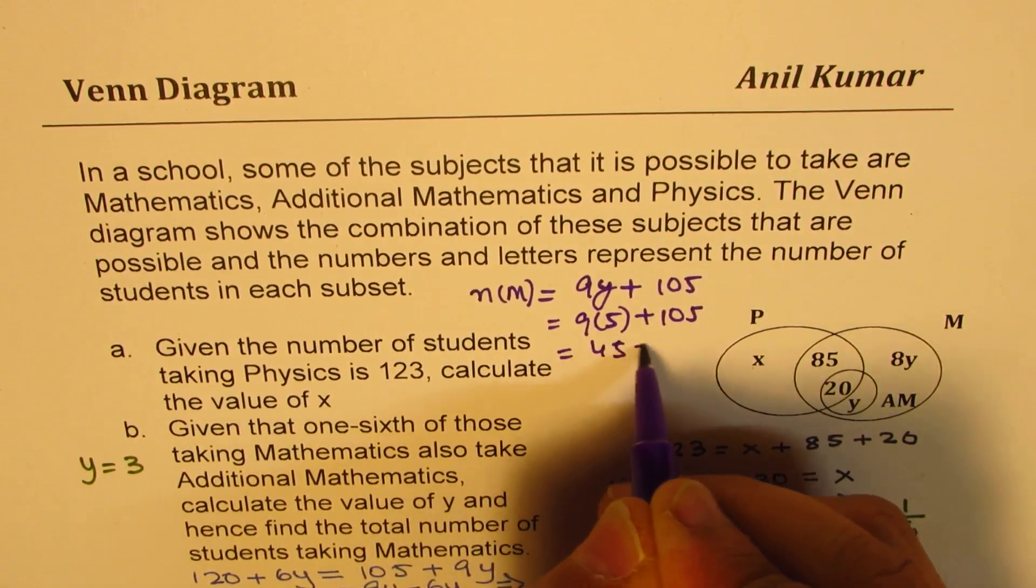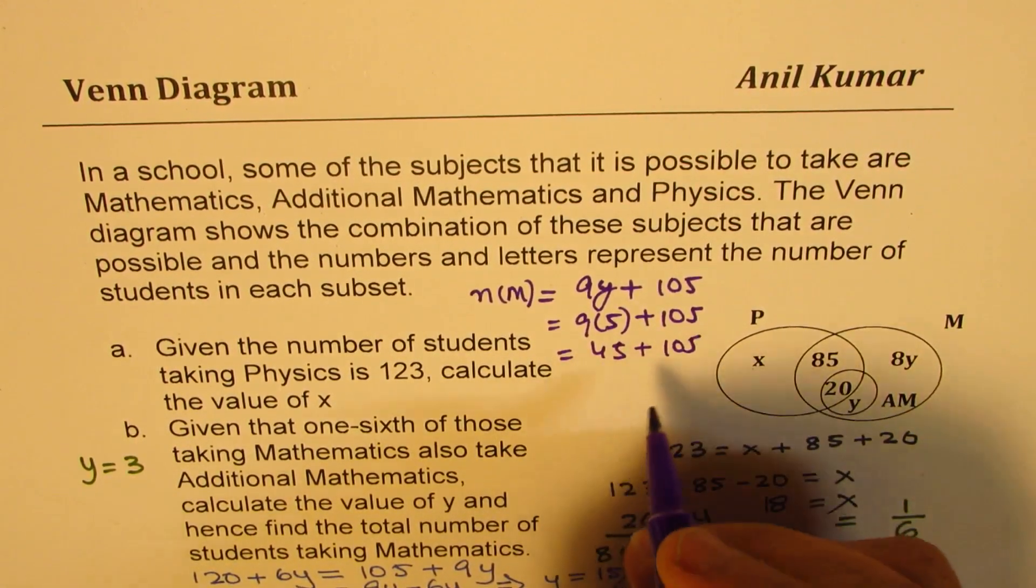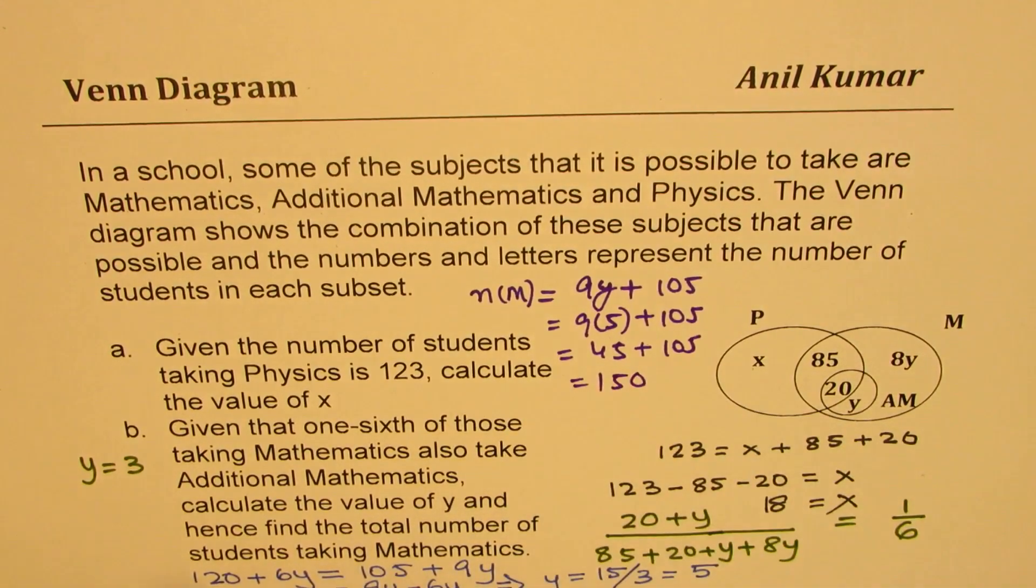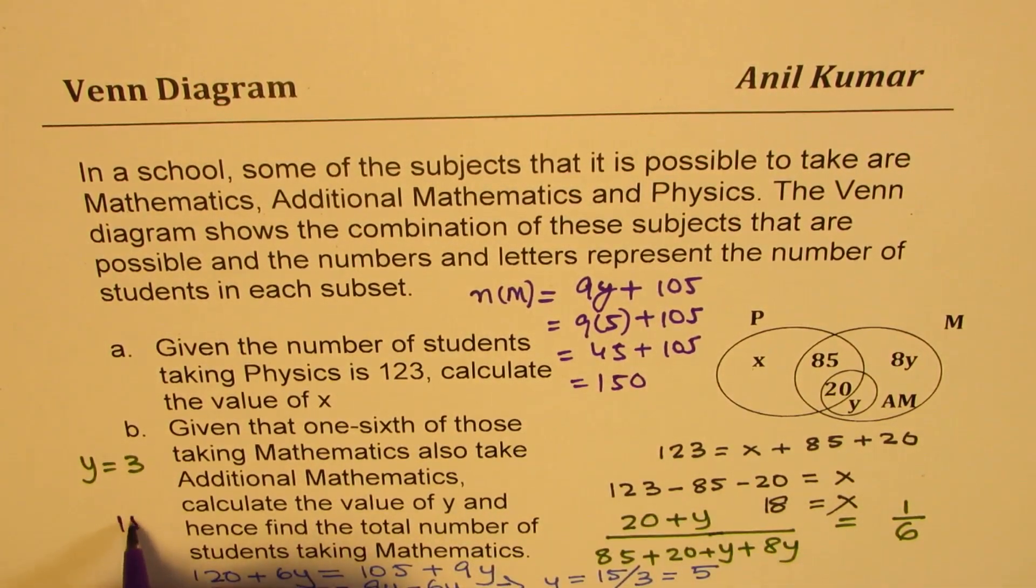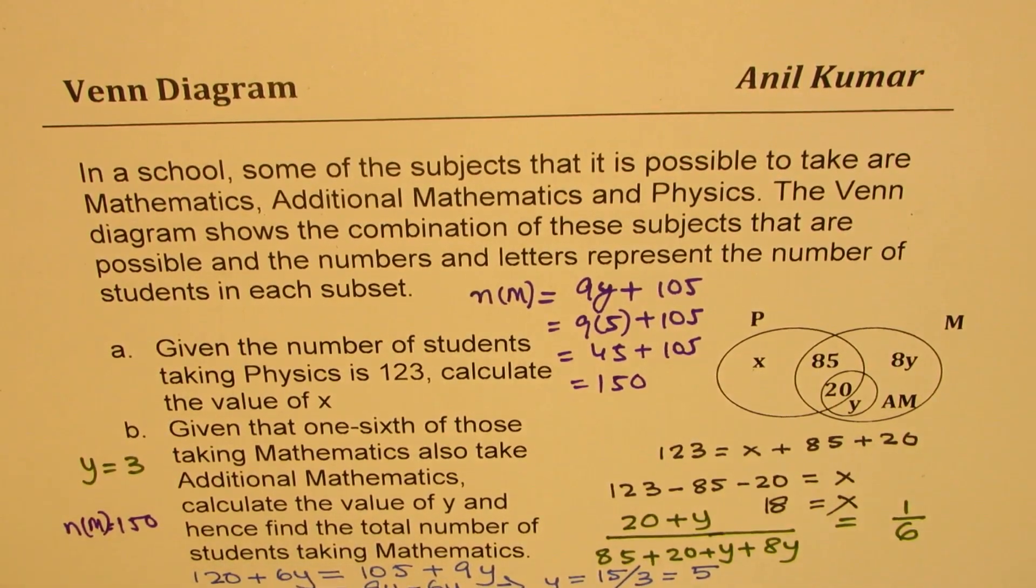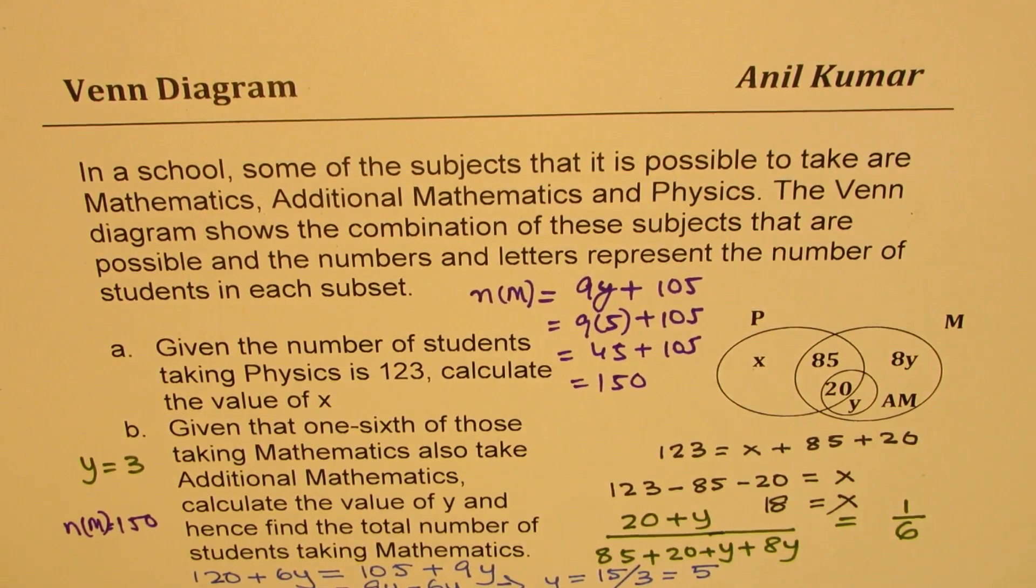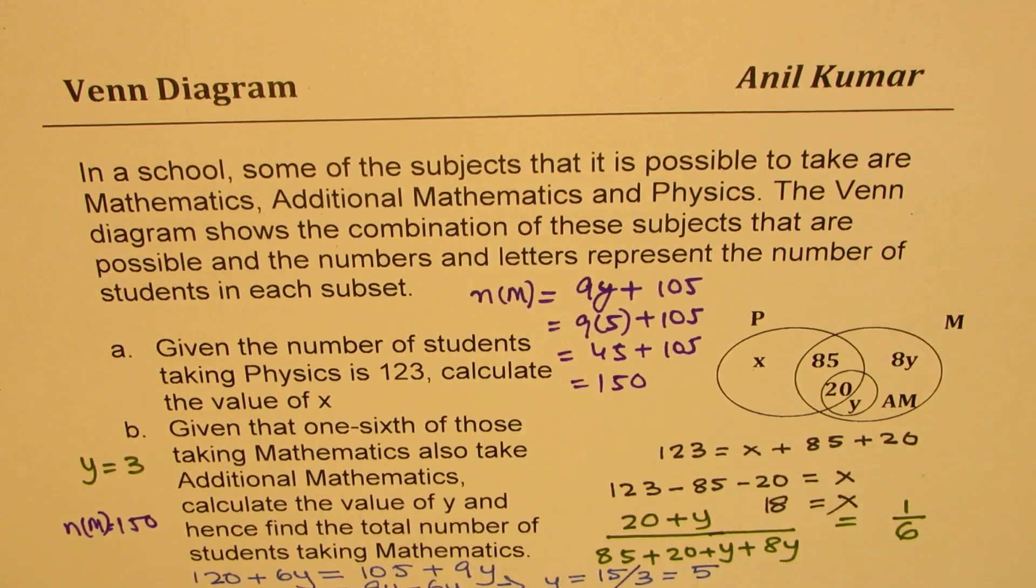And y is 5 for us, so that gives you 45 plus 105 or 150. So the answer here is 150 for students taking mathematics. Good. So that is how this question can be solved. So I hope you find it systematic and logical. Feel free to write your comments and share your views. And Iroam, thanks a lot once again for sharing these valuable questions. All the best.